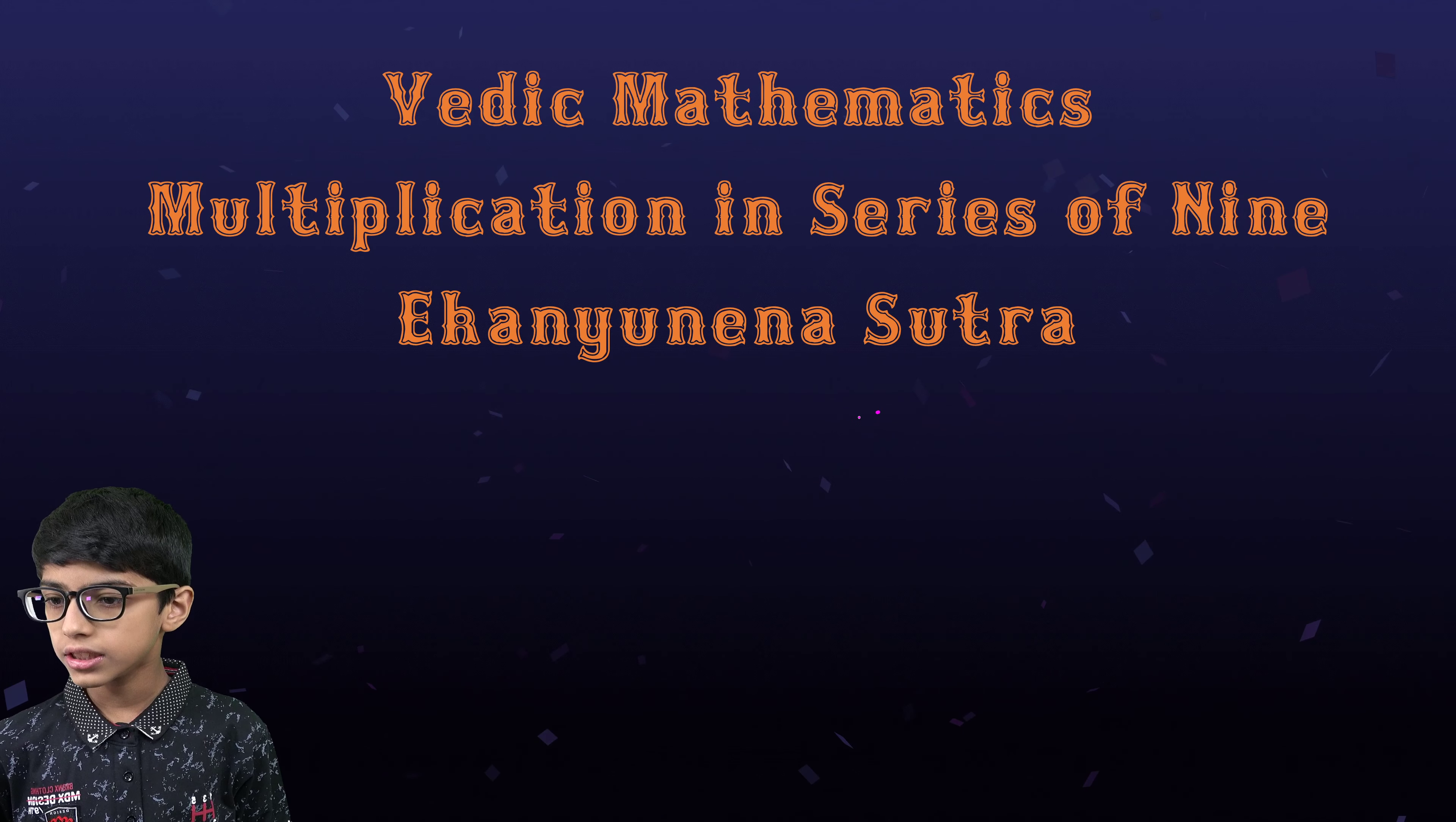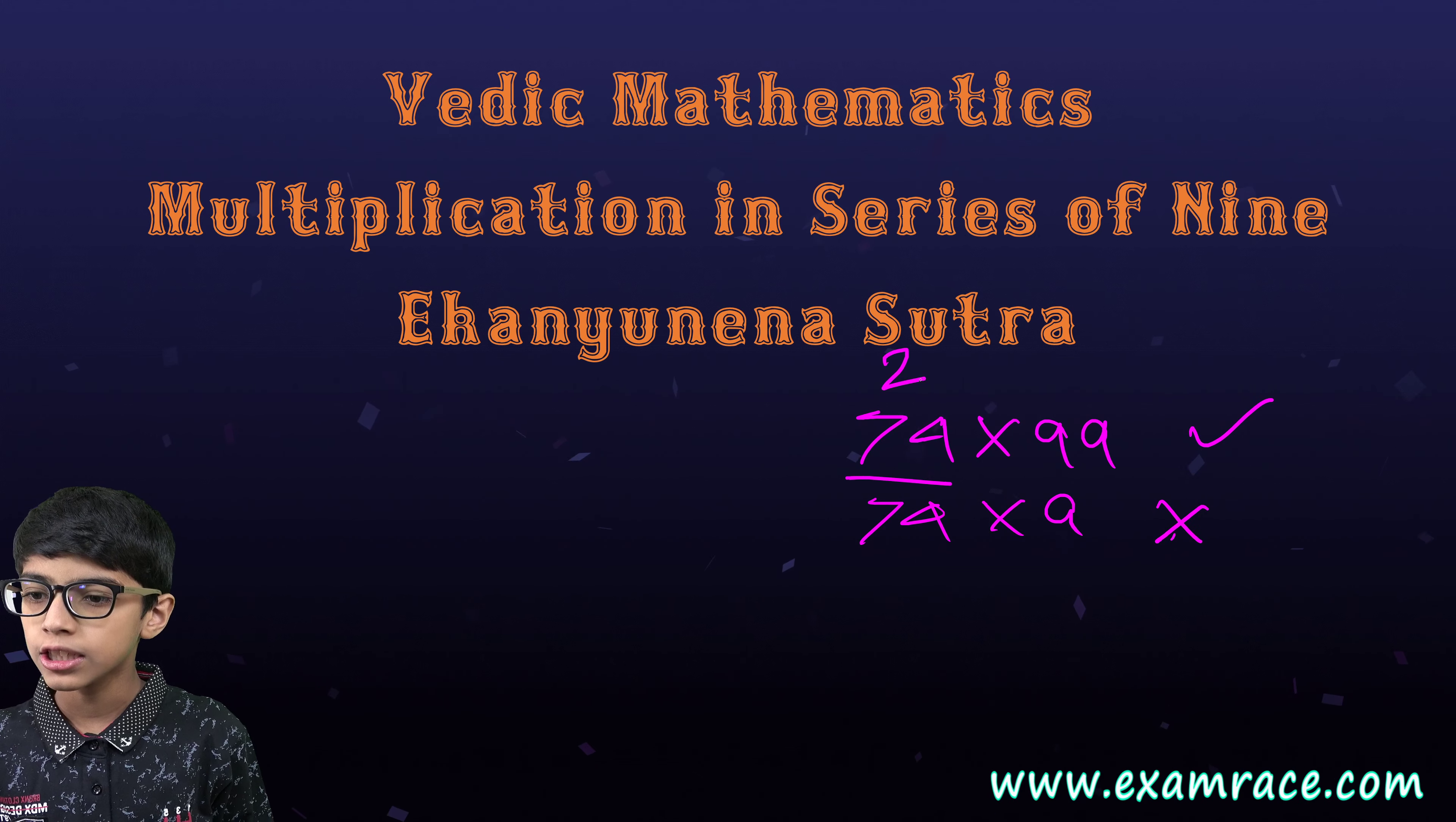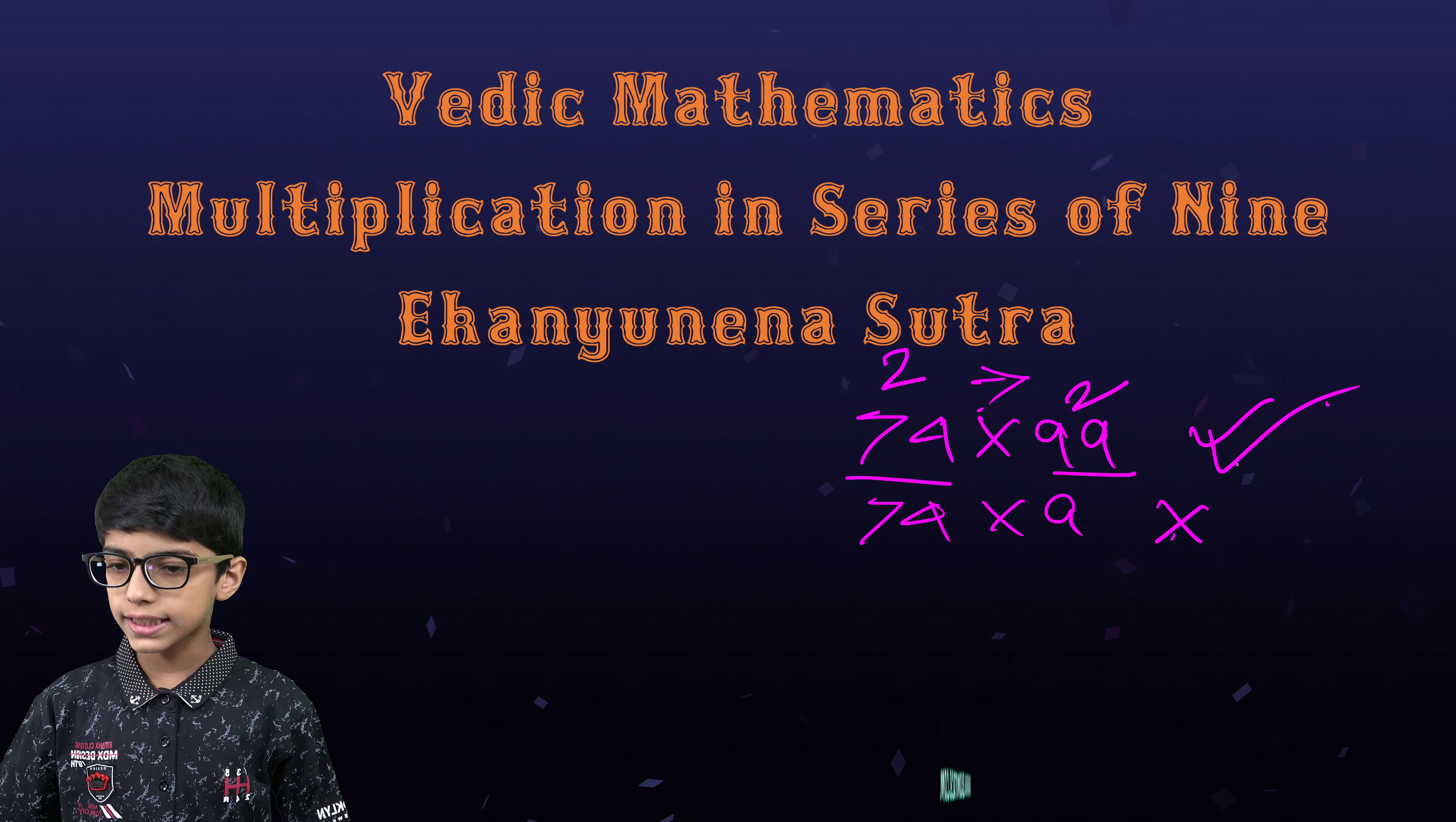Such as 74 into 99 can be done, but 74 into 9 cannot be done. Because 74 has 2 digits and 99 has 2 digits, the number of digits are same. Therefore, this is possible.